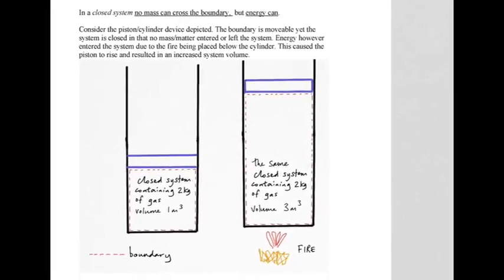The closed system did, however, receive energy through the boundary. The fire heated the cylinder walls and the energy moved through the boundary and entered the closed system. So no mass crossed the boundary, but certainly energy did come in from the fire underneath the cylinder.